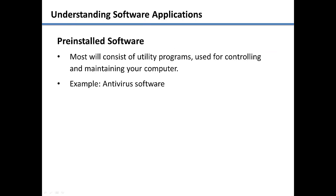Your operating system will come with lots of programs pre-installed. Most of these programs will consist of what is called utility programs. These are programs that are used for controlling and maintaining the computer. An example of a utility program is an antivirus application, which is used for protecting your computer from unwanted malware.